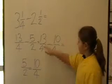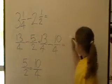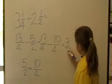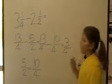Now what we do is we go 13 take away 10 which equals 3 on 4. So our answer is 3 fourths.